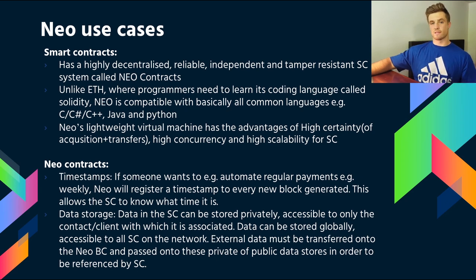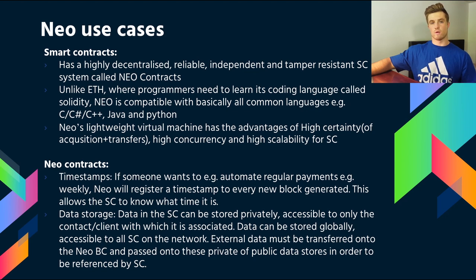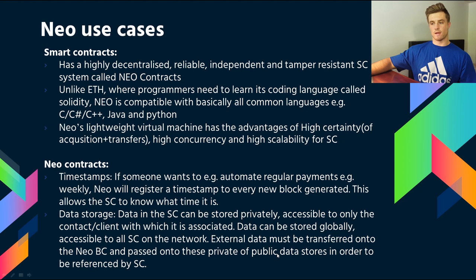Data within a smart contract can be stored privately, accessible only to the contract and client it was associated with, or stored as a global asset accessible by all smart contracts on the network. However, external data from other sources and platforms must be transferred onto the NEO blockchain and passed into these public or private data stores before they can be referenced by a smart contract.